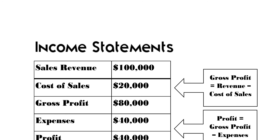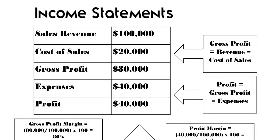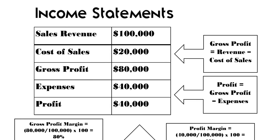To start off we're going to look at income statements, and income statements measure the profitability of a company. It should look something like this and you'll definitely be given sales revenue, cost of sales and expenses, because from those figures you can calculate gross profit and profit. In terms of gross profit, the formula is revenue — which is 100,000 — minus 20,000, giving us a gross profit of 80,000.